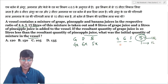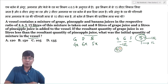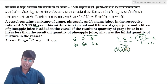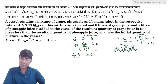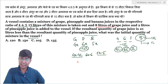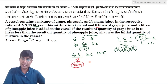अगर आप minus 15 liter of mixture करते हो vessel में से, तो उसमें से grapes कितना हो जाएगा — वो हो जाएगा 4x minus 4 liter. Pineapple कितना हो जाएगा: 6x minus 6, और banana कितना होगा: 5x minus 5. अब question में क्या कह रहा है कि 8 liter of grape juice आपने add कर दिया है, तो final quantity कितना हो जाएगा — यह हो जाएगा 4x plus 4.